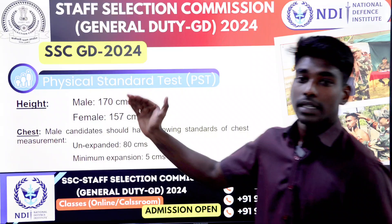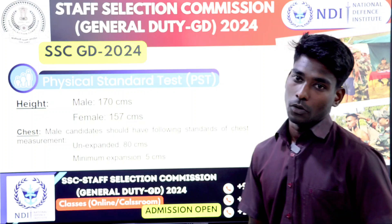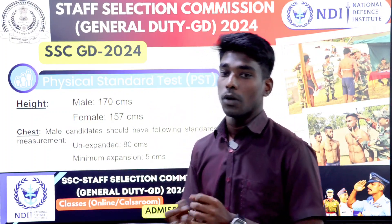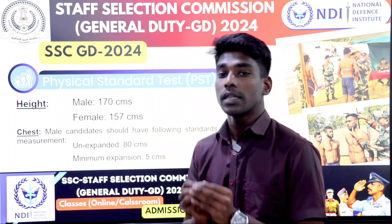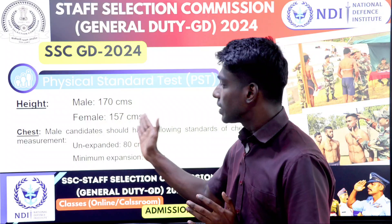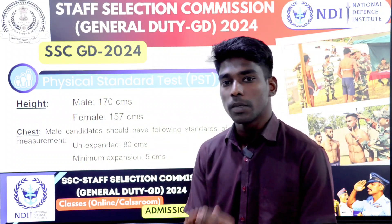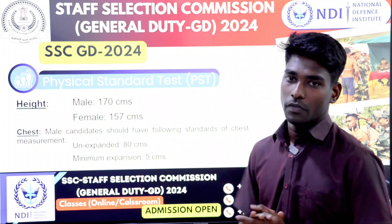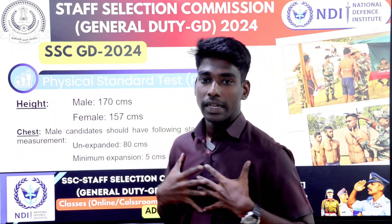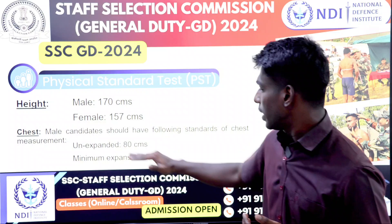For the Physical Standard Test, the height requirement for males is 170 cm. For ST category candidates, the minimum height is 162.5 cm. For females, the height is 157 cm. For ST females, it is 155 cm. The chest measurement for males is normally 80 cm with a 5 cm expansion.